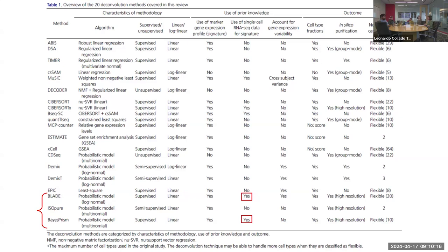I was planning to use it for our data. The idea is to take the estimated cell-type-specific expression for each sample and create networks — this time instead of having one gene matrix per sample, you would have six, eight, or however many cell types you can get from these methods. For instance, BLADE is flexible in handling 20 cell types, BayesPrism handles 10, and some are not so flexible — they cannot estimate more than two.